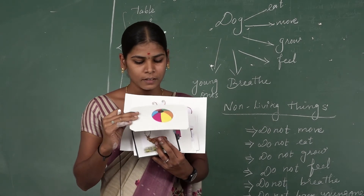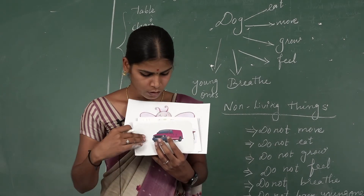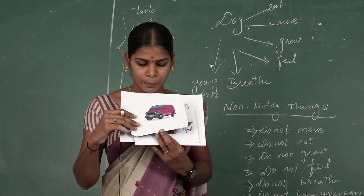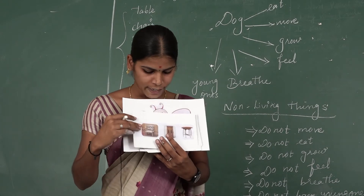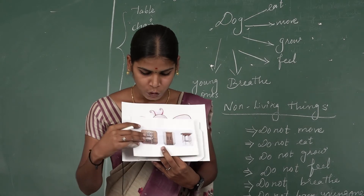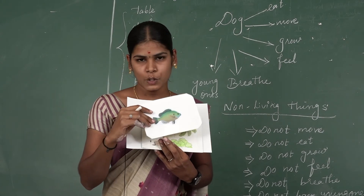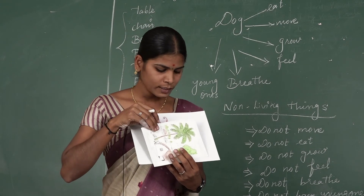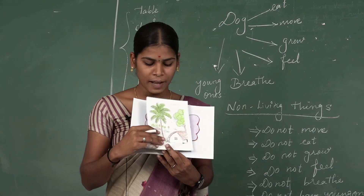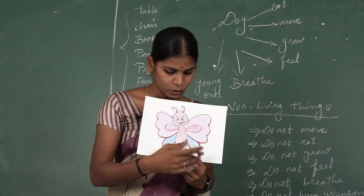A deer can move from one place to another, so it is a living thing. A van can move from one place to another, but it needs manpower - petrol or some other fuel - so it is a non-living thing. Chair, door, table - these are all non-living things; they cannot move on their own. Fish is a living thing - it needs food and can move. Plants don't move from one place to another, but they need food, they grow, and they breathe, so plants are also living things. A butterfly is an insect - it needs food and moves from one place to another, so it is a living thing.